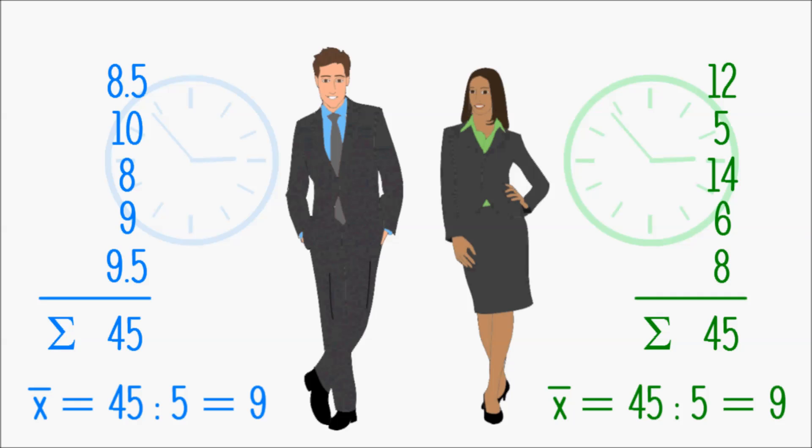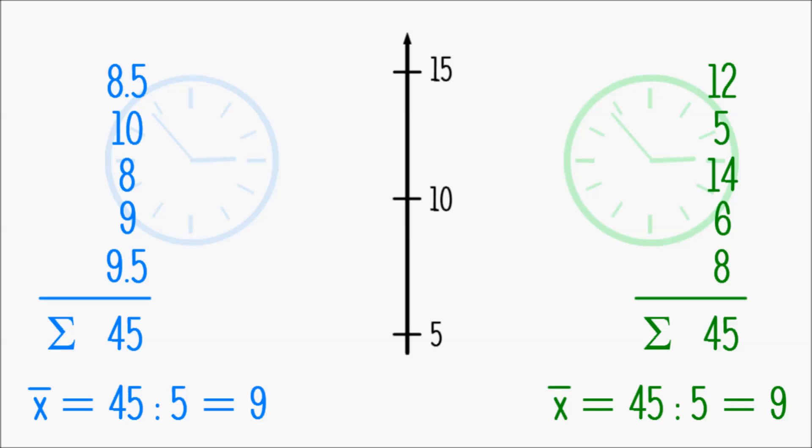Let me illustrate the situation on a number line. First, I'll put a red mark at the average number of working hours per day, which was 9 and then one mark for each of Patrick's working hours and the same thing for Anna.